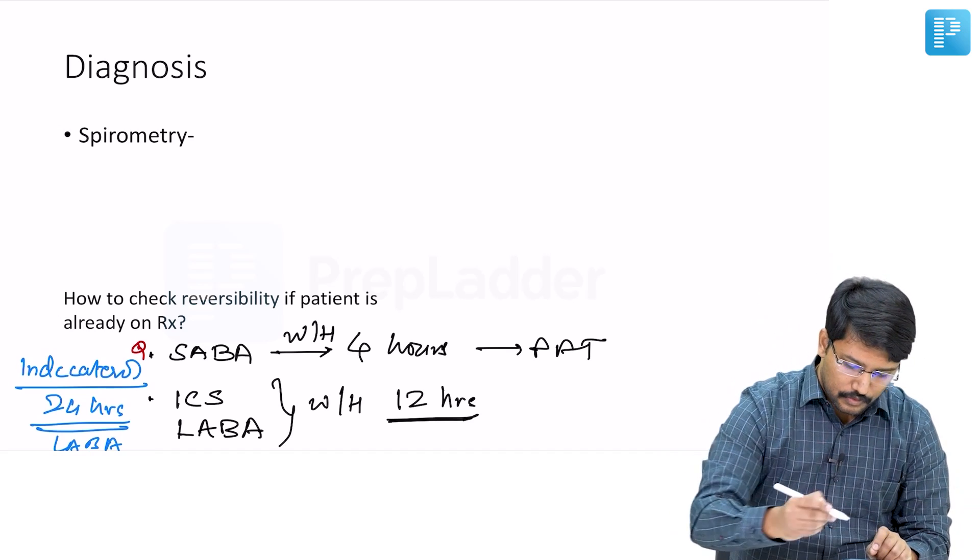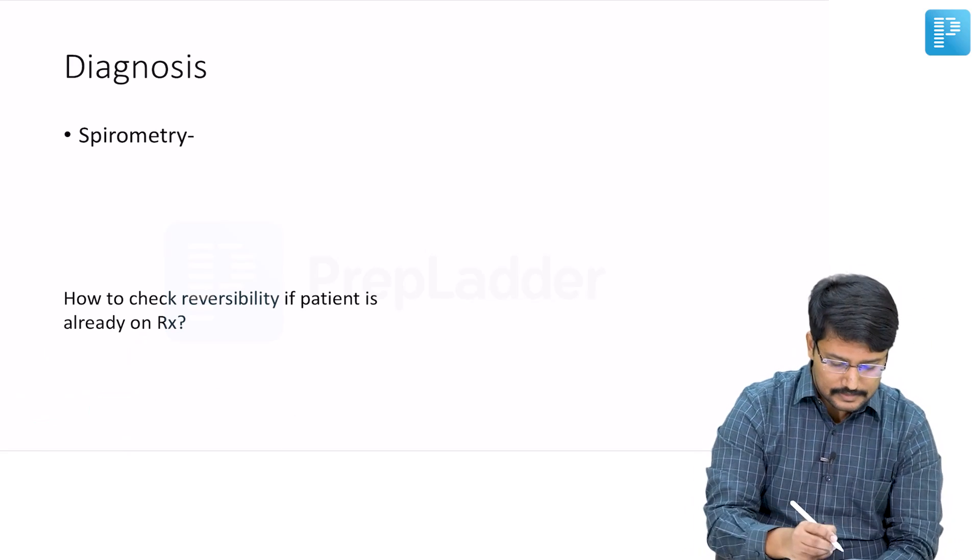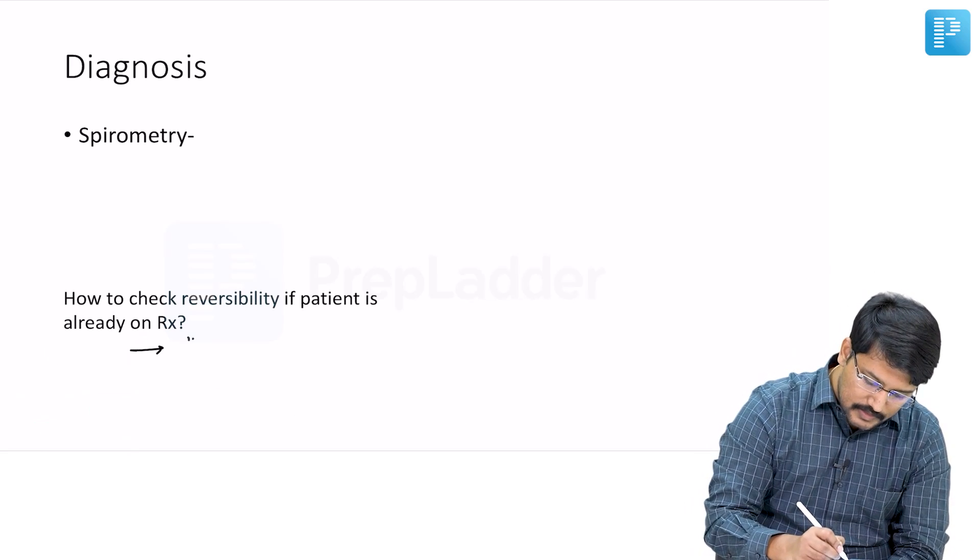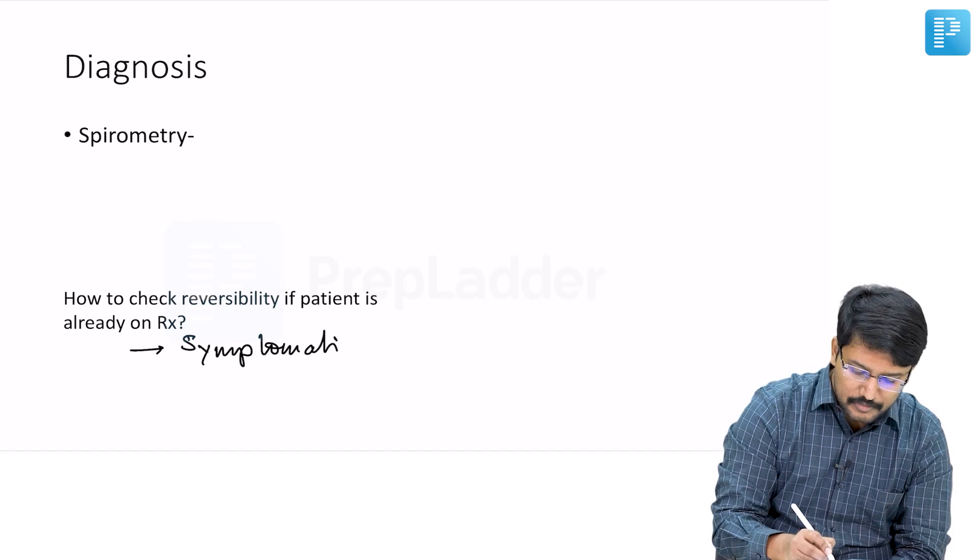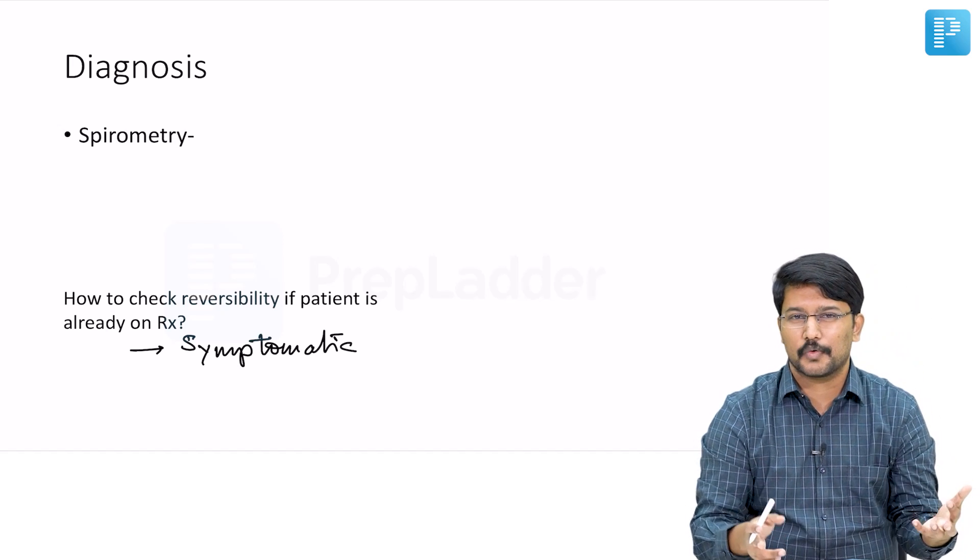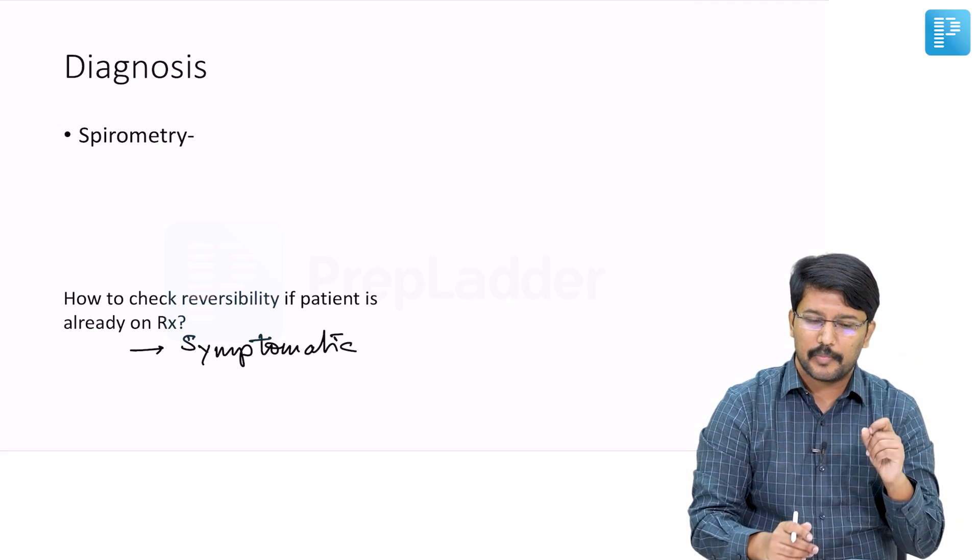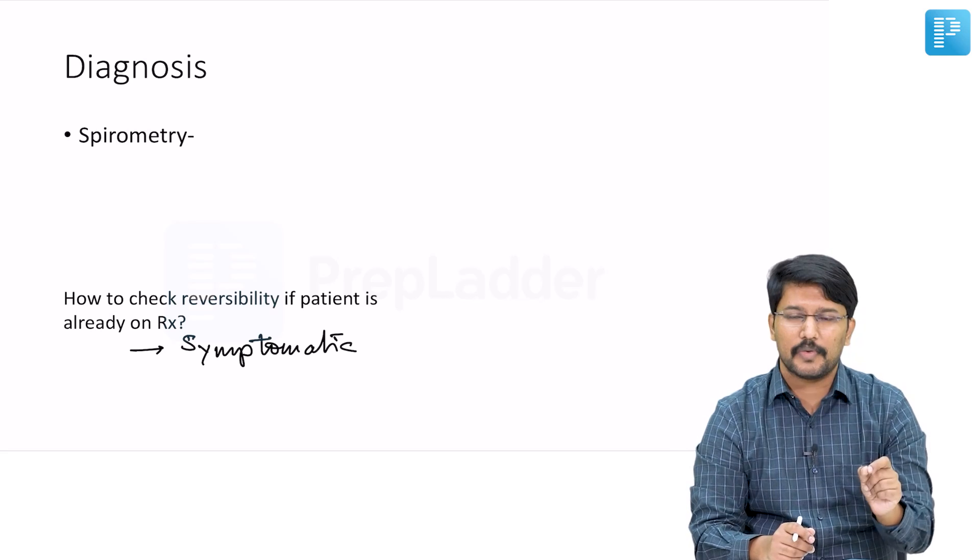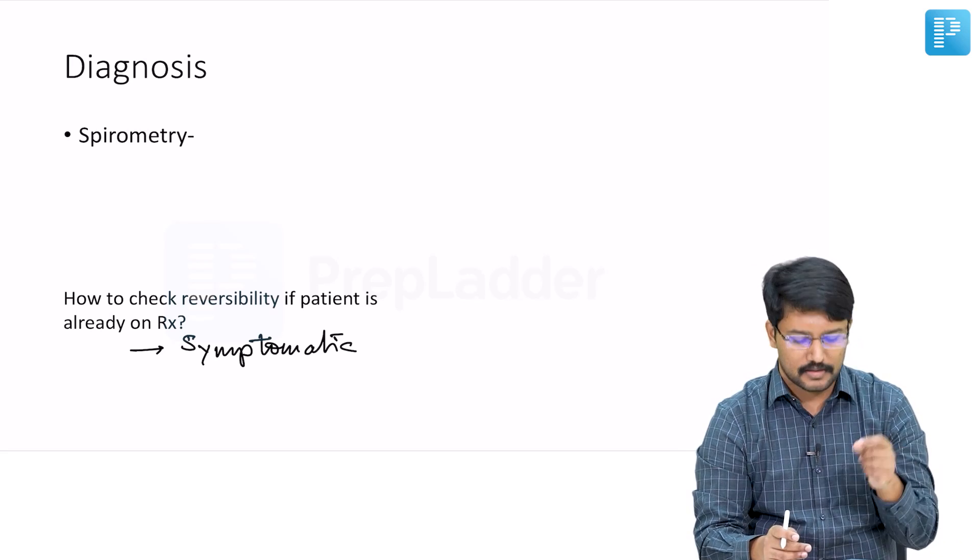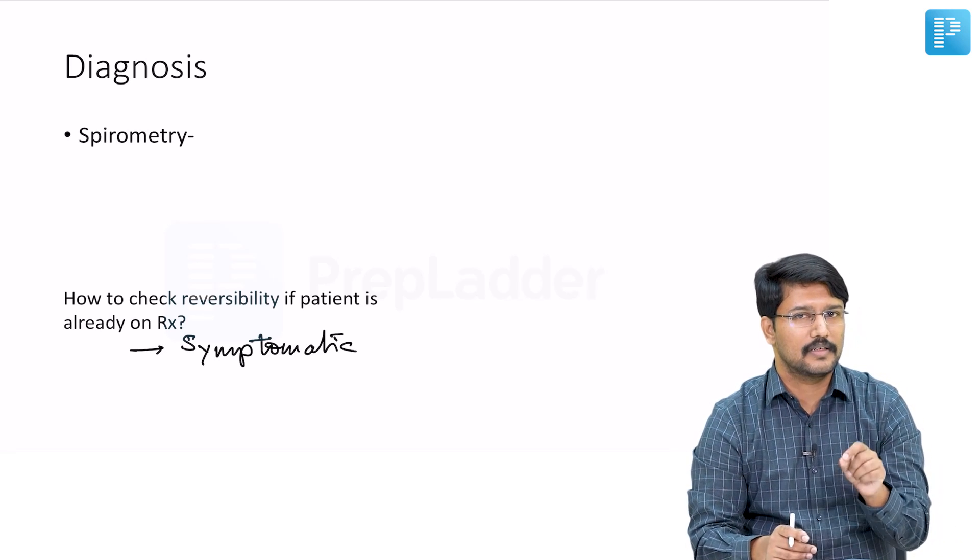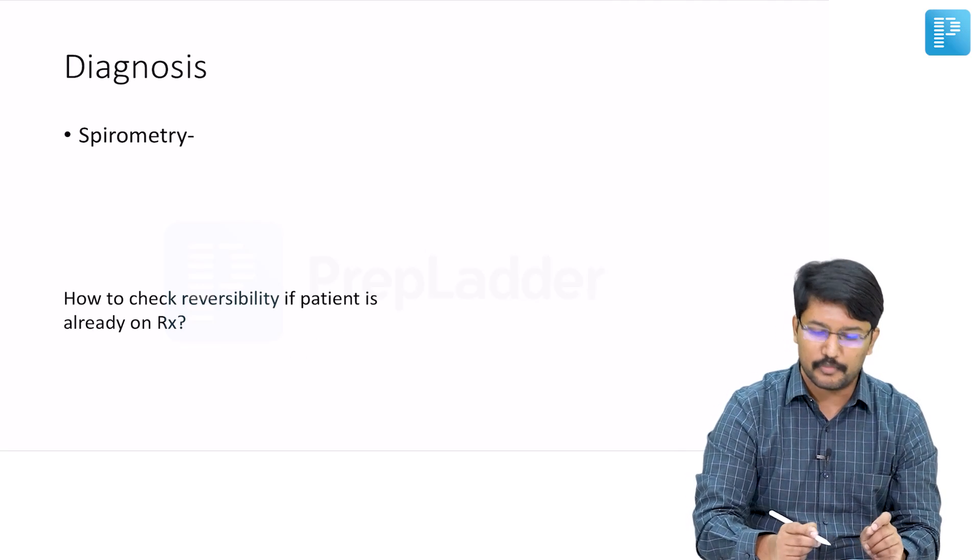Another point I forgot to make is that much simpler to this is just assess their symptoms and the bronchodilator reversibility whenever those who are on treatment are symptomatic. You can assess because if they are symptomatic, that means they are either inadequately treated or they are non-responders, and you can definitely assess the bronchodilator reversibility during the period when they are symptomatic.